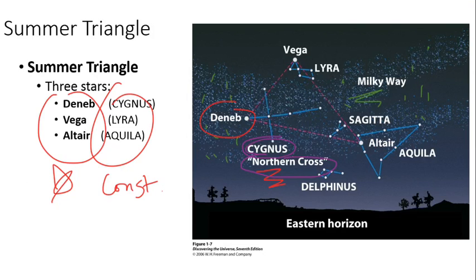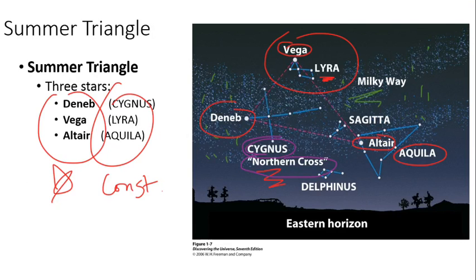Over here we have this cute little constellation called Lyra, supposed to be like a harp or a lyre, and we have the bright star Vega — used to be my daughter's favorite star when she was five, a very beautiful blue star. And we finish off the Summer Triangle with the star Altair in the constellation Aquila, Aquila being the eagle. So that is the Summer Triangle.